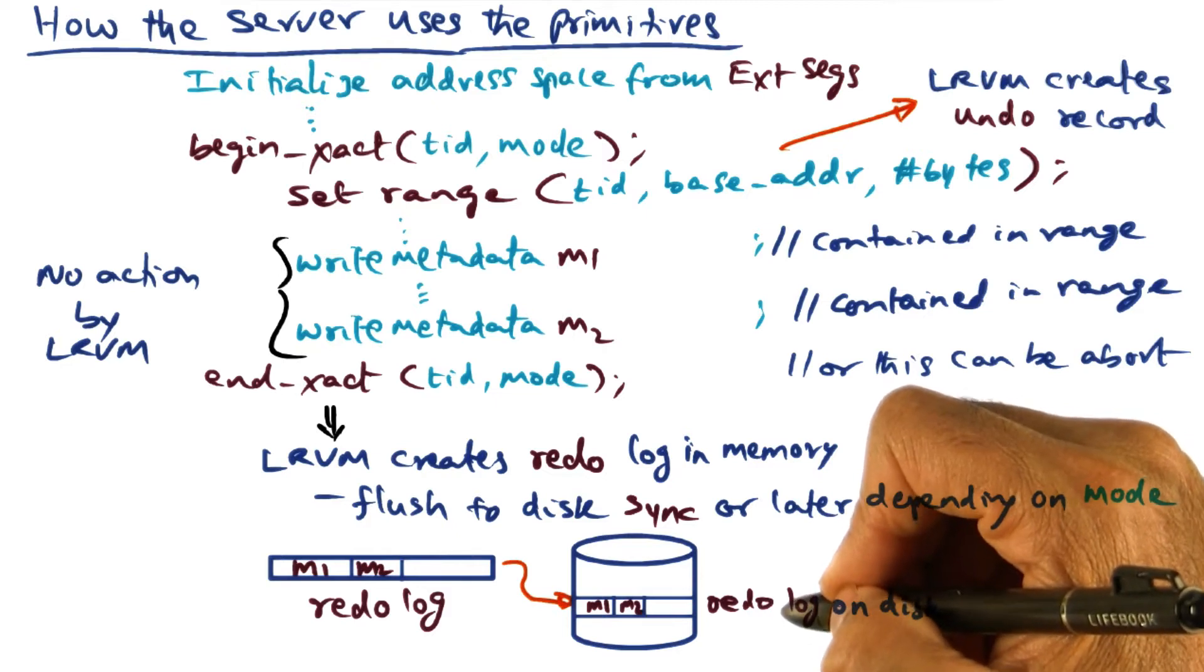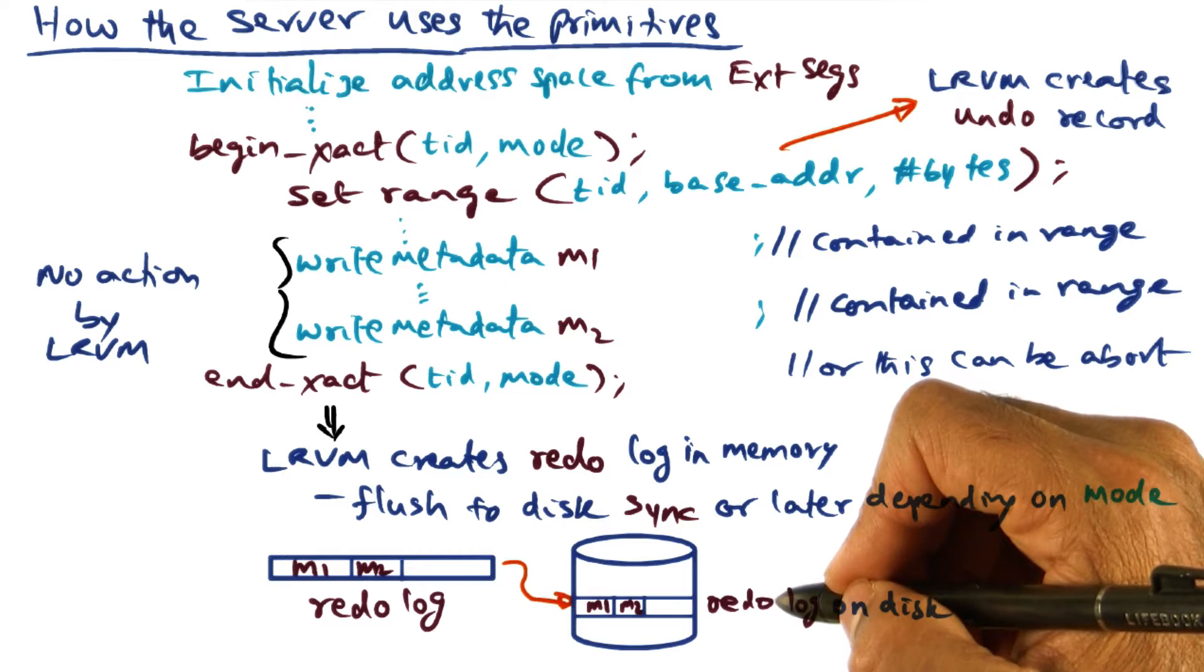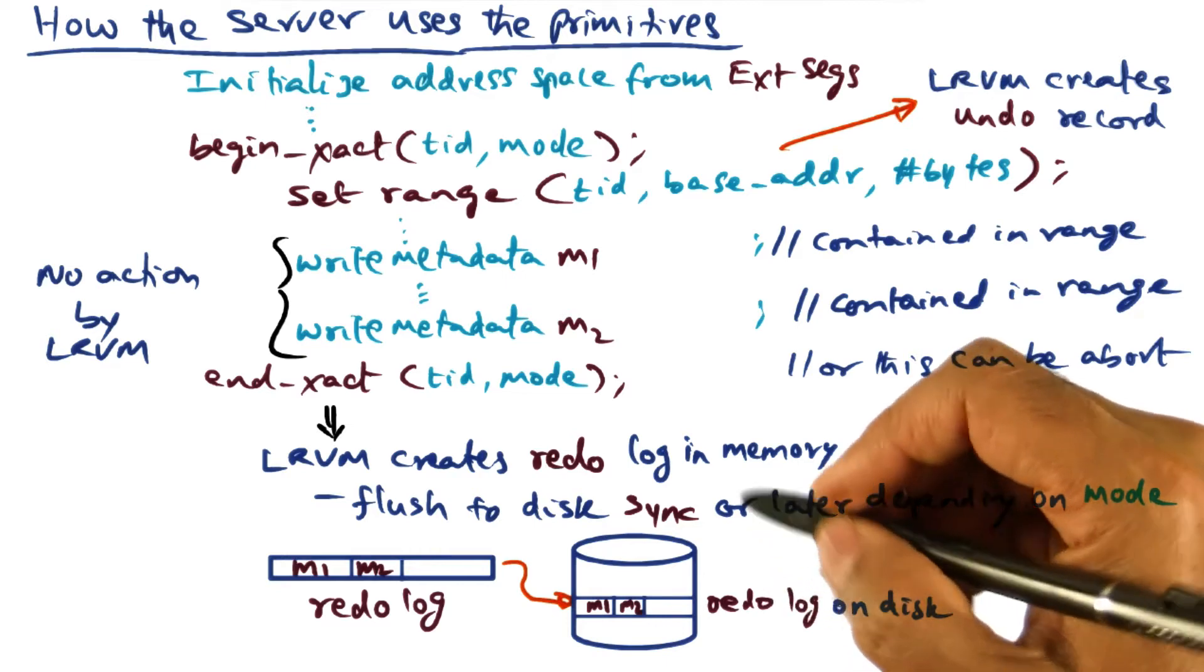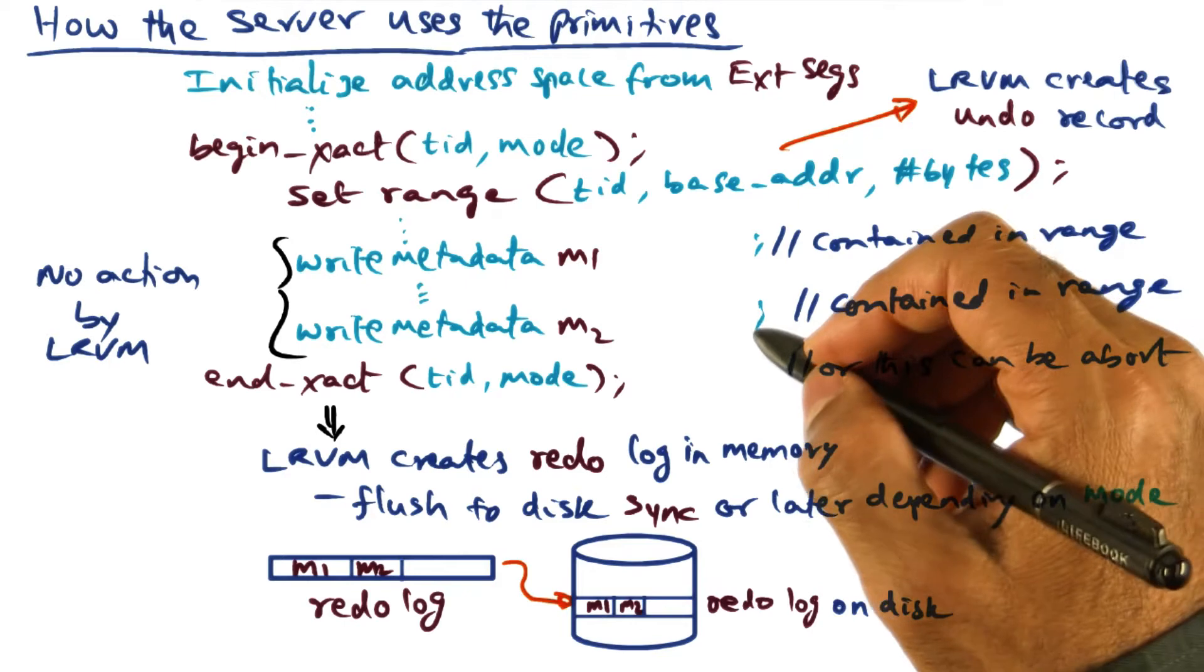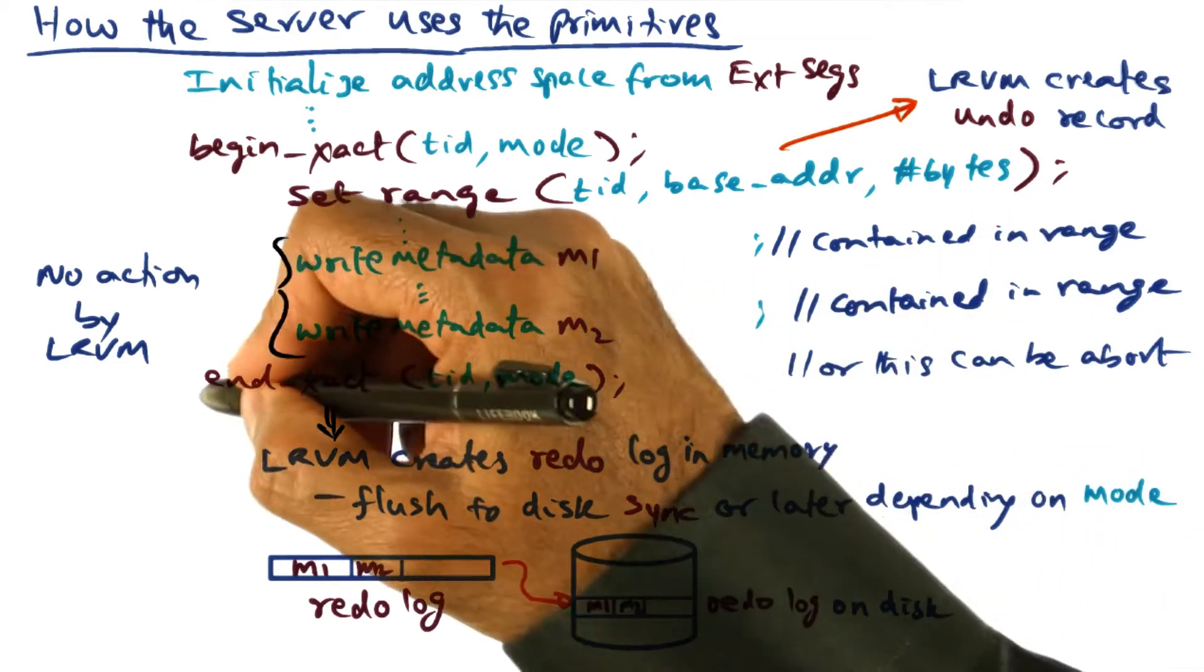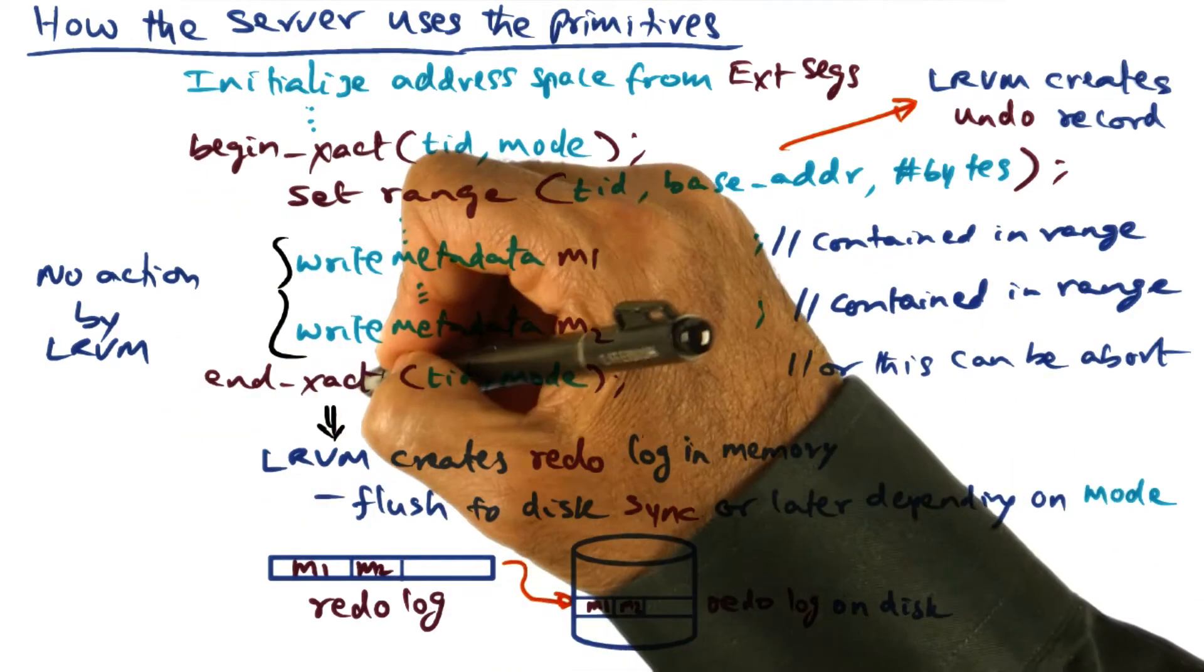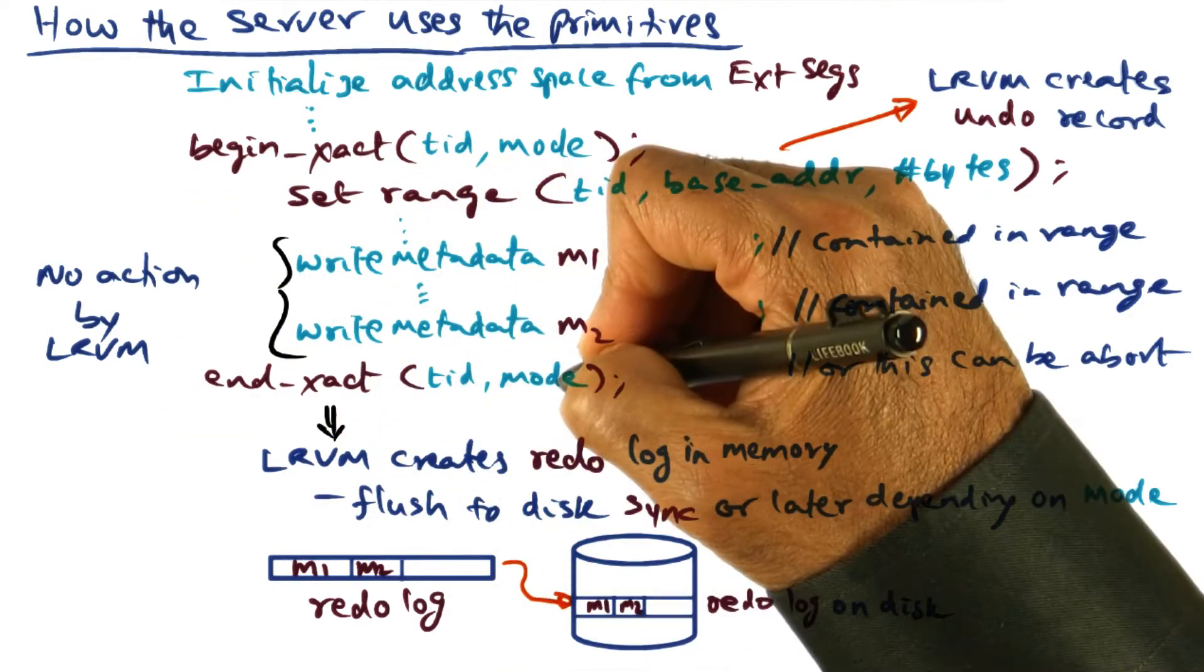However, again, in order to make sure that we can have a performant implementation of LRVM, there is a mode available in the end transaction. And this mode says no flush, meaning at the point of end transaction, you don't necessarily have to block the caller for the flush to be complete.